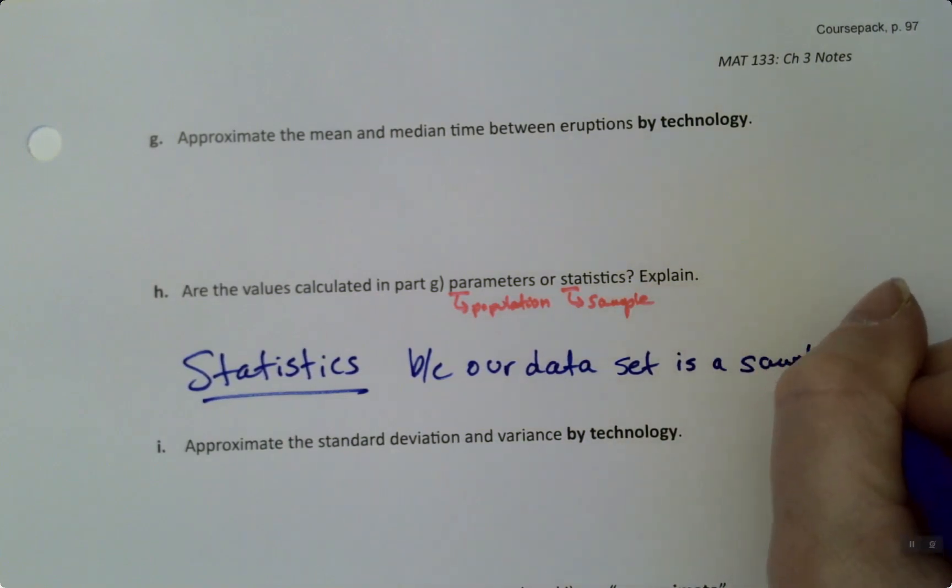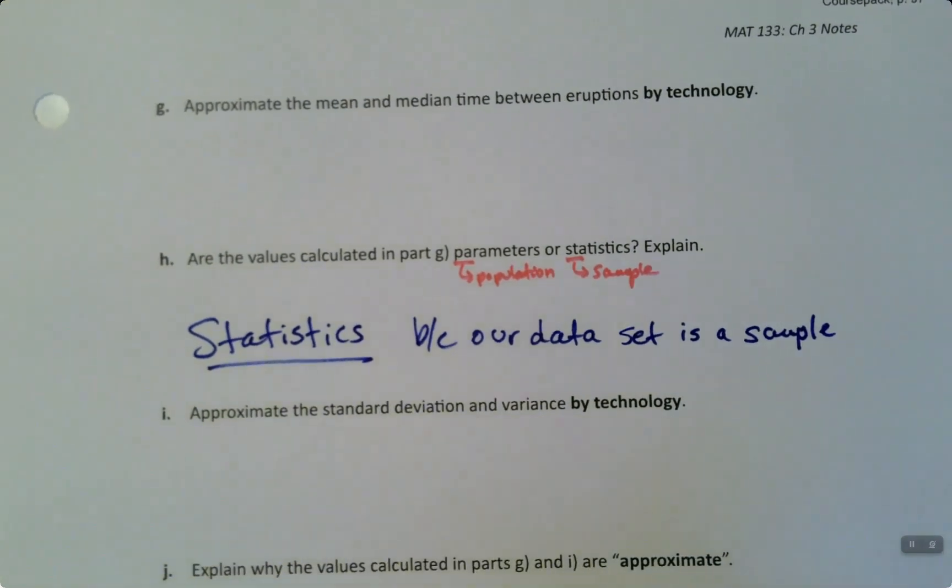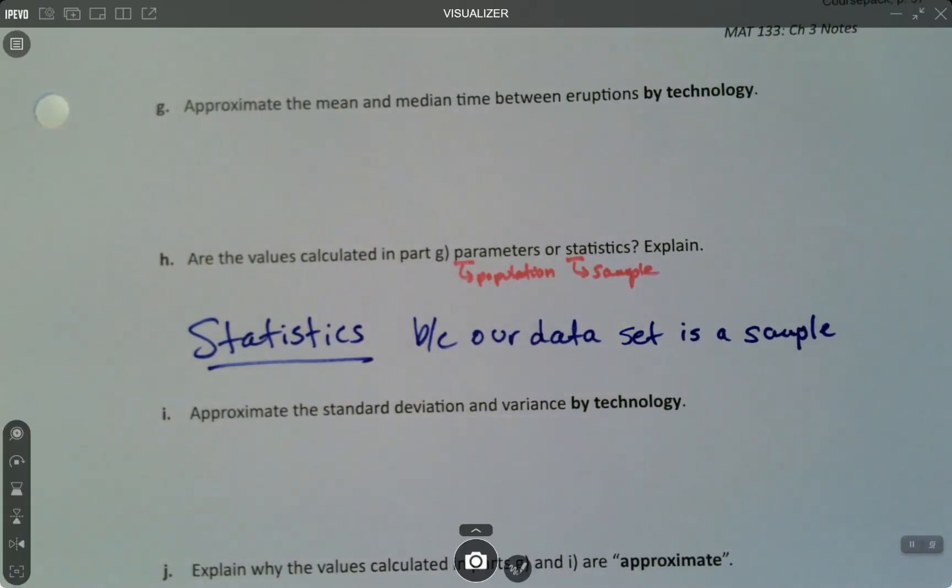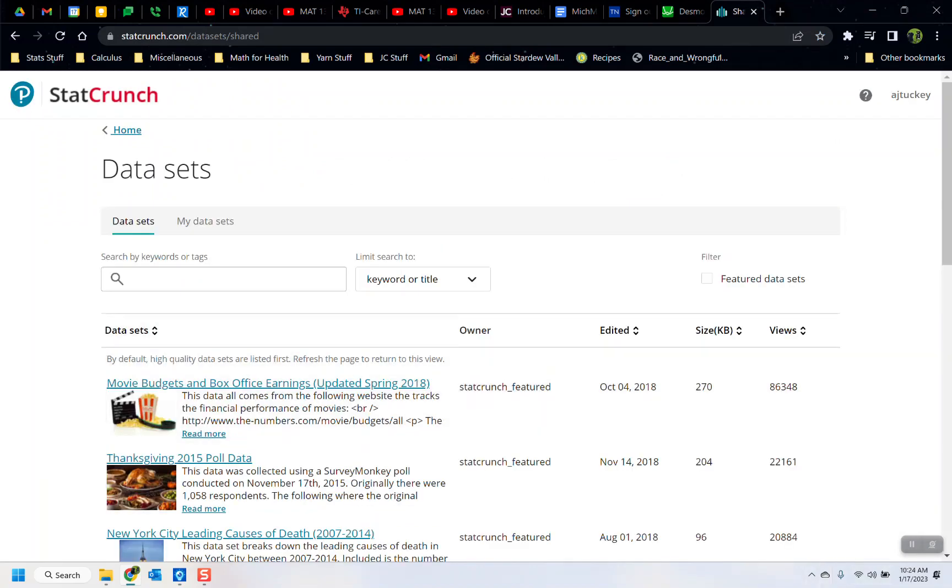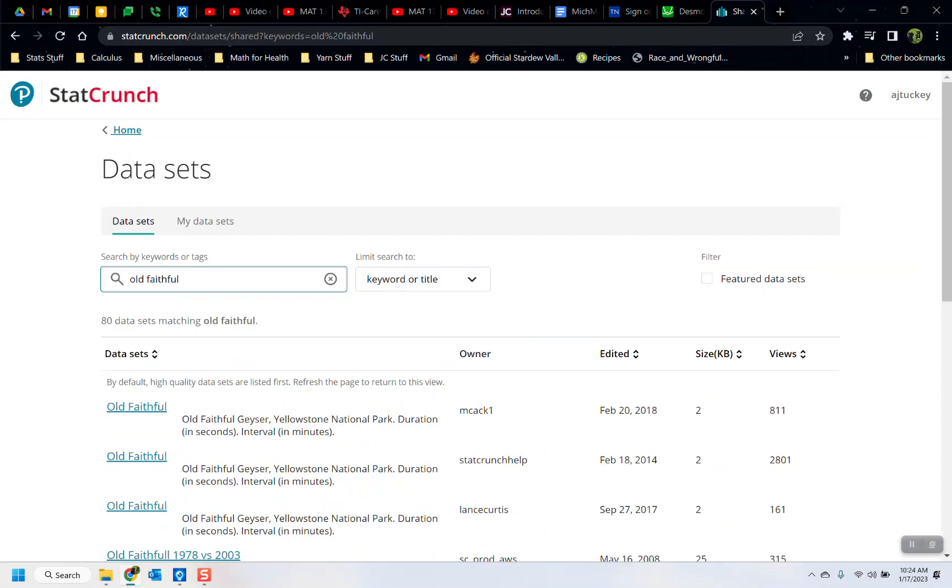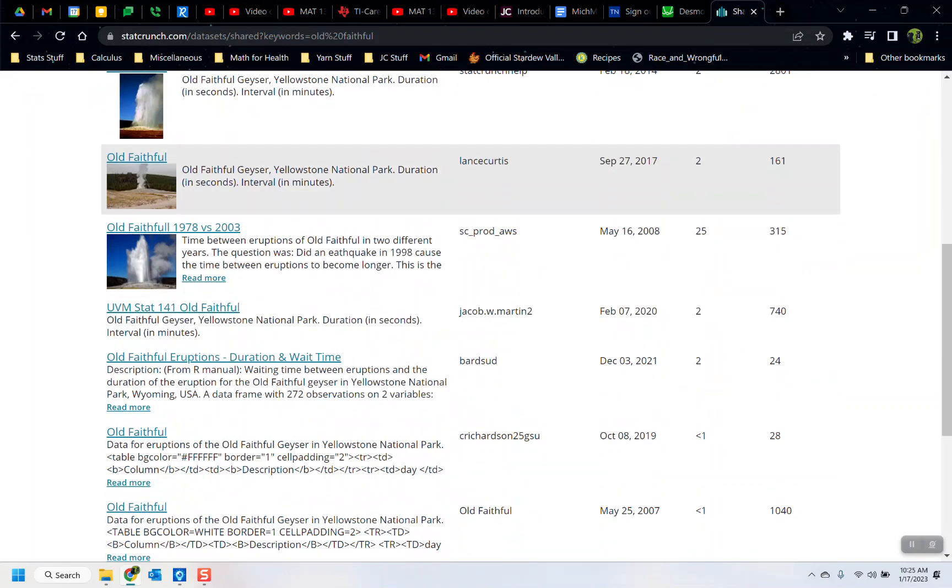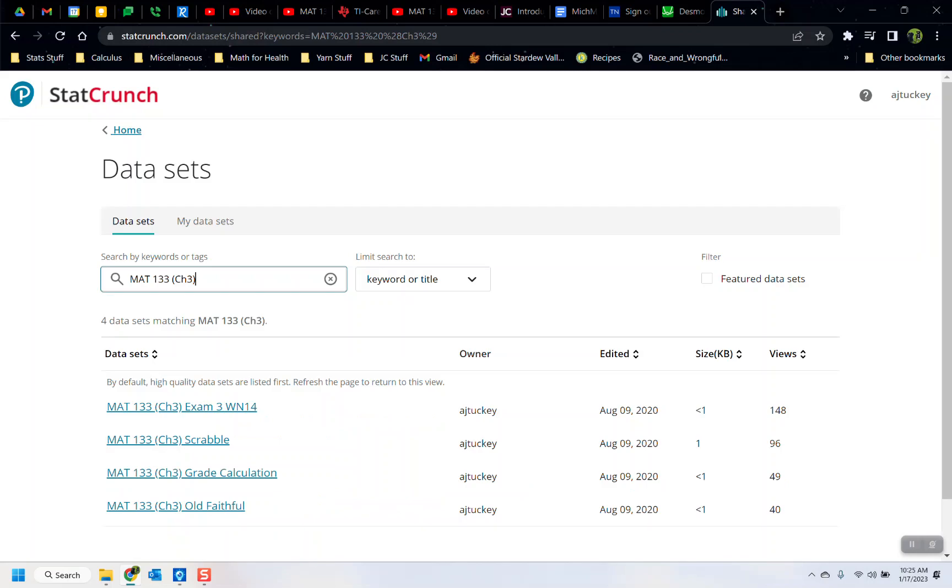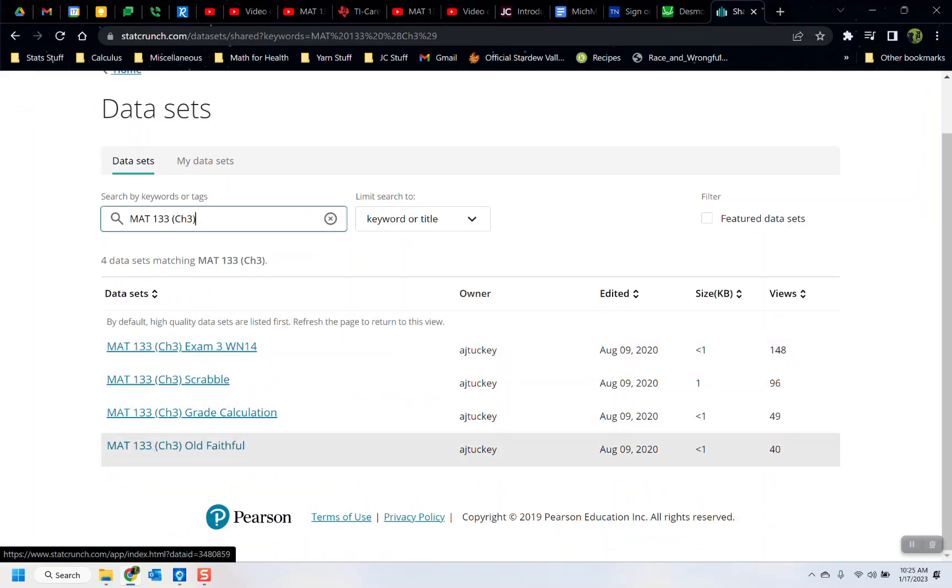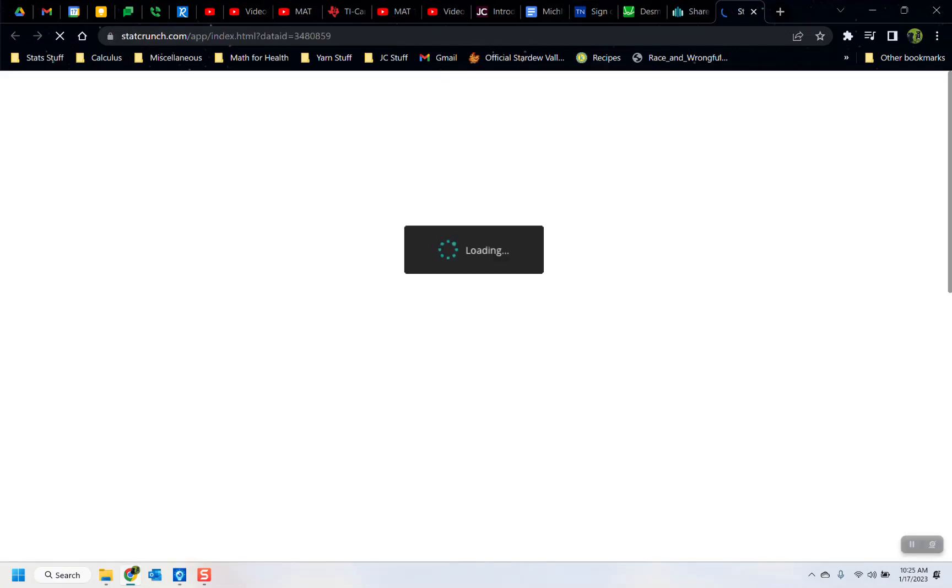And before we even get into these things, we have to think about whether these are parameters or statistics, because it will affect the standard deviation and the variance in particular. This was a sample of 200 wait times. And because it's a sample, that means that it must be statistics. So I'll just remind you all: S goes with a sample. Parameter goes with a population. So the values that we are going to find are statistics, because our data is a sample. We want to figure that out first, because then we're going to go find all of these values: the mean, the median, the standard deviation, and the variance with StatCrunch. So let me go to StatCrunch. Let me go to Datasets. And I'm going to look up Old Faithful.